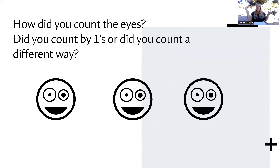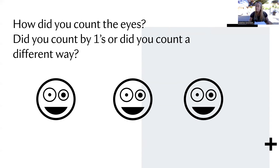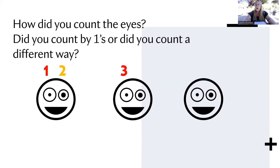Okay, here are the people. How many people were there? That's right — there are three people. And how did you count the eyes? Did you count by ones, or did you count a different way? We'll go ahead and count by ones together. Are you ready? Let's do it. One, two, three, four, five, six. How many eyes? Six eyes — that's right!